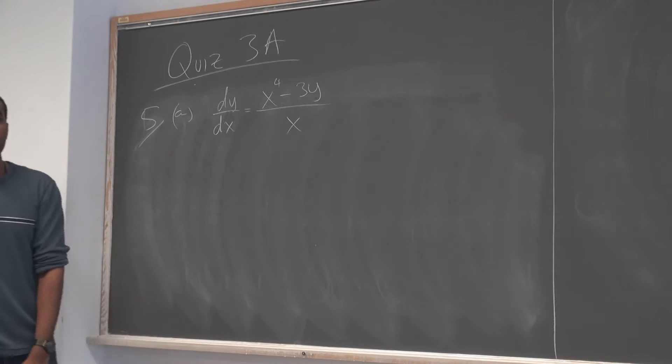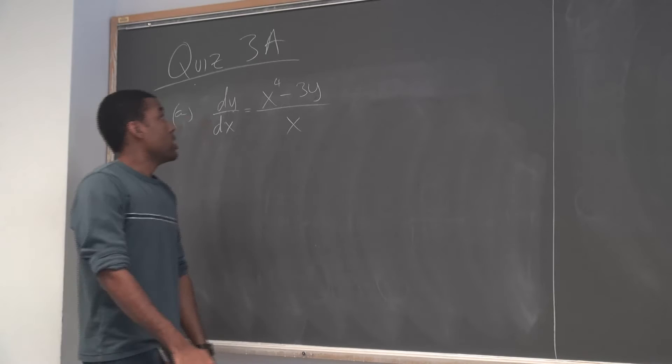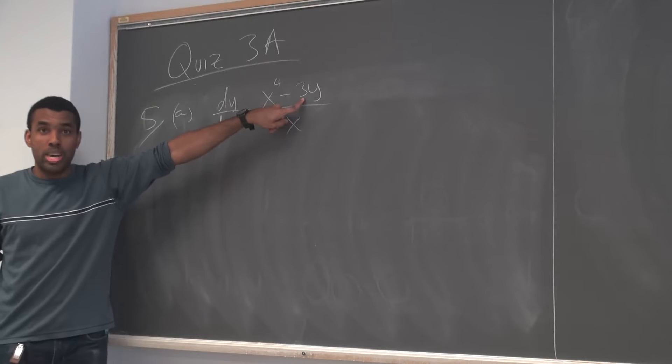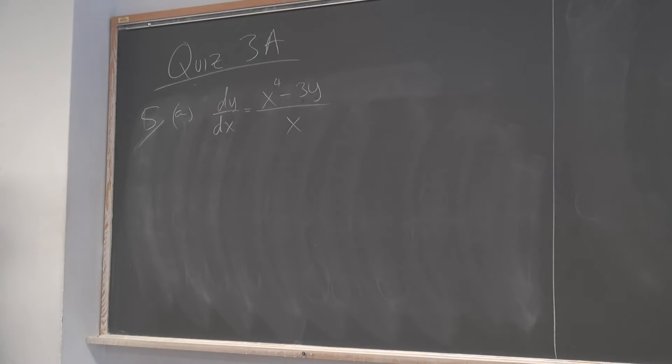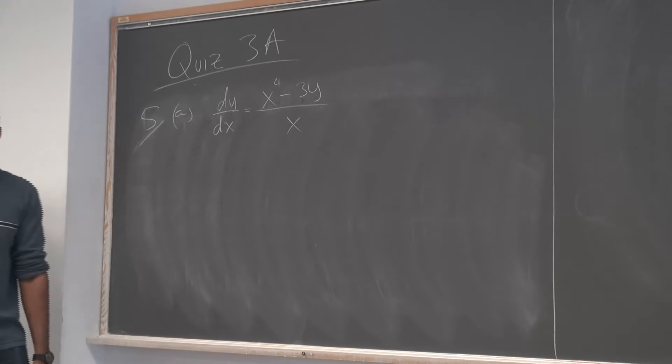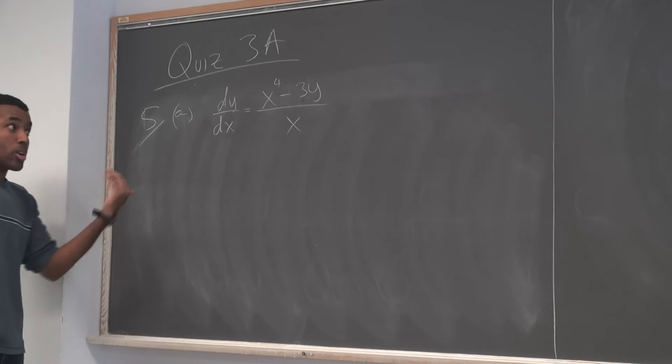It is a linear equation. It's not an exact equation either, because of this 3. If that 3 were a 1, it would actually be exact and you could solve it that way. But with the 3, your M_y would be -3 and N_x would be -1, so it's not exact. It's obviously not separable and not homogeneous — the only other thing is linear.